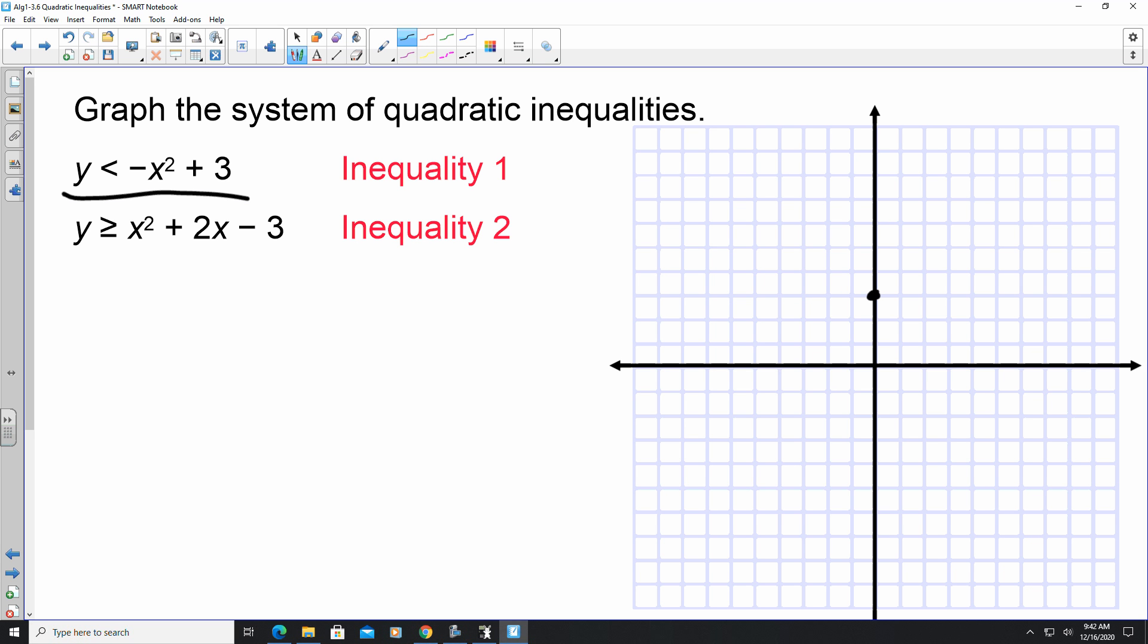So now, because a is negative, I know that my graph is going to look something like this. Now if I use my test point of 0, 0, is 0 less than 0 plus 3? The answer is yes. So if it was just this, I would shade inside this parabola. But because we have more to work with, we have to figure out the other one.